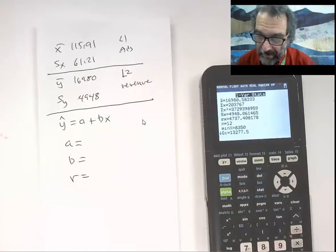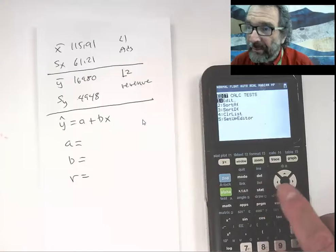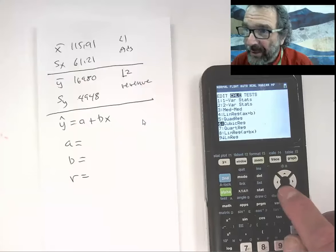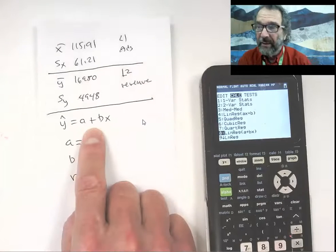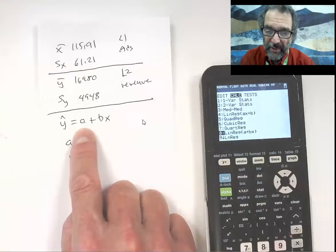So far so good. And then I'm going to go to stat, calc, go down to linear regression. I'm going to go to this one, a plus bx. I'm used to a plus bx, like that. So in this case a is the intercept, b is the slope.